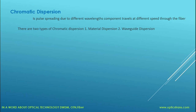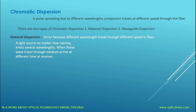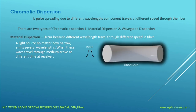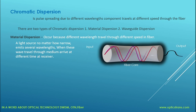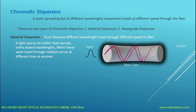There are two types of chromatic dispersion: material dispersion and waveguide dispersion. Material dispersion occurs because different wavelengths travel through the fiber at different speeds. A light source, no matter how narrow, emits several wavelengths, and when these wavelengths travel through the medium they arrive at different times at the receiver. As you can see in the diagram, different wavelengths are traveling at different speeds and arriving at different times, causing the light pulse to spread out.